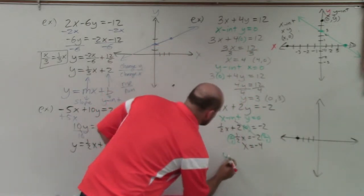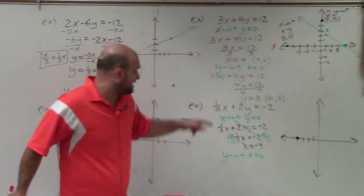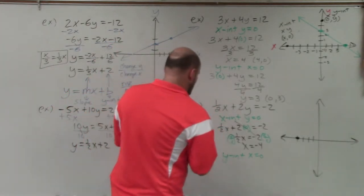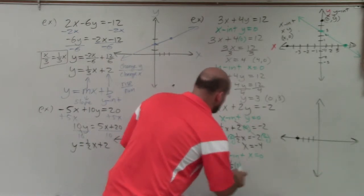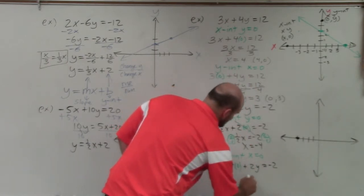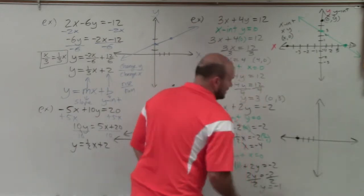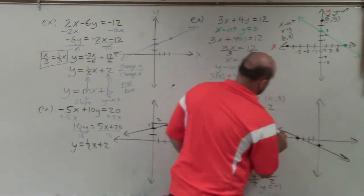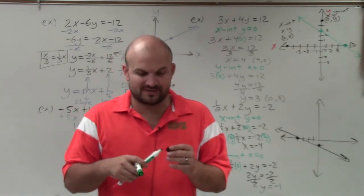And then I do my y-intercept, y-intercept, x equals 0. And this is also very nice when you have fractions, because now when doing this, I basically get rid of doing my fraction here. And so therefore, I have 1/2 times 0 plus 2y equals negative 2. Well, that goes to 0, so I'm left with 2y equals negative 2. Divide by 2, divide by 2, y equals negative 1. So I go down to negative 1, make a point, and then connect. So there you go, ladies and gentlemen. That is how you graph equations when they are not in slope-intercept form, thanks.